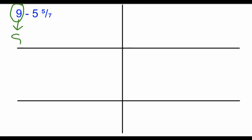I'm going to rename 9 as 8 and, thinking about my denominator here, 7 over 7. 8 plus 7 sevenths still equals 9. It's an equivalent mixed number for 9. Now my new problem is 8 and 7 sevenths minus our other fraction 5 and 5 sevenths.